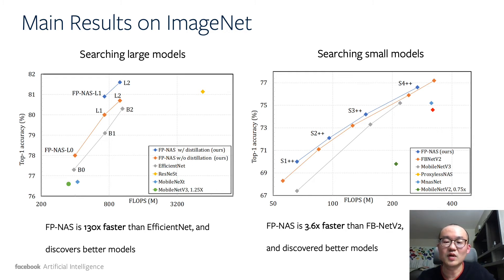For searching smaller models, FP-NAS is nearly 4 times faster than FBNetV2, while still discovering models with higher accuracy.